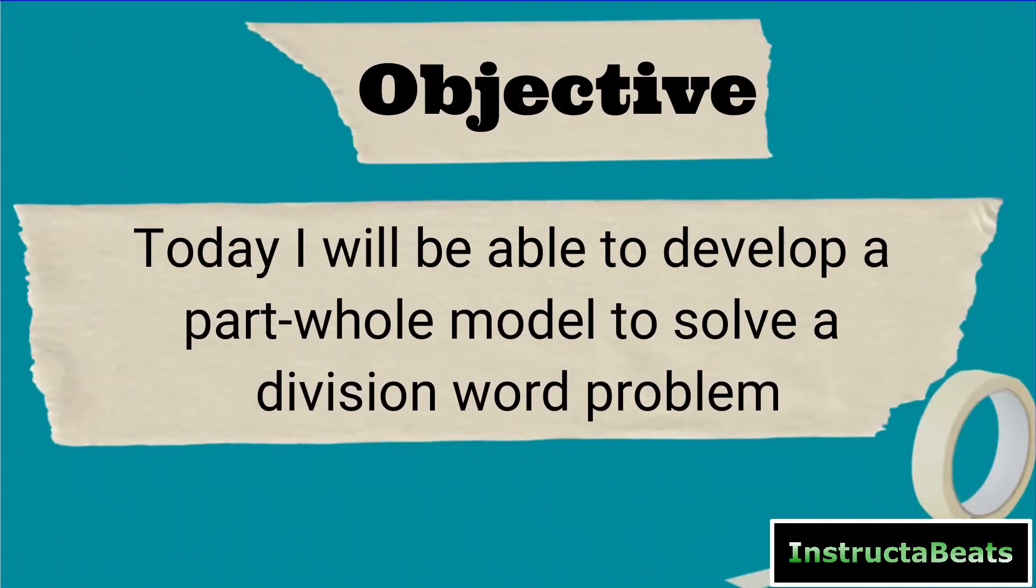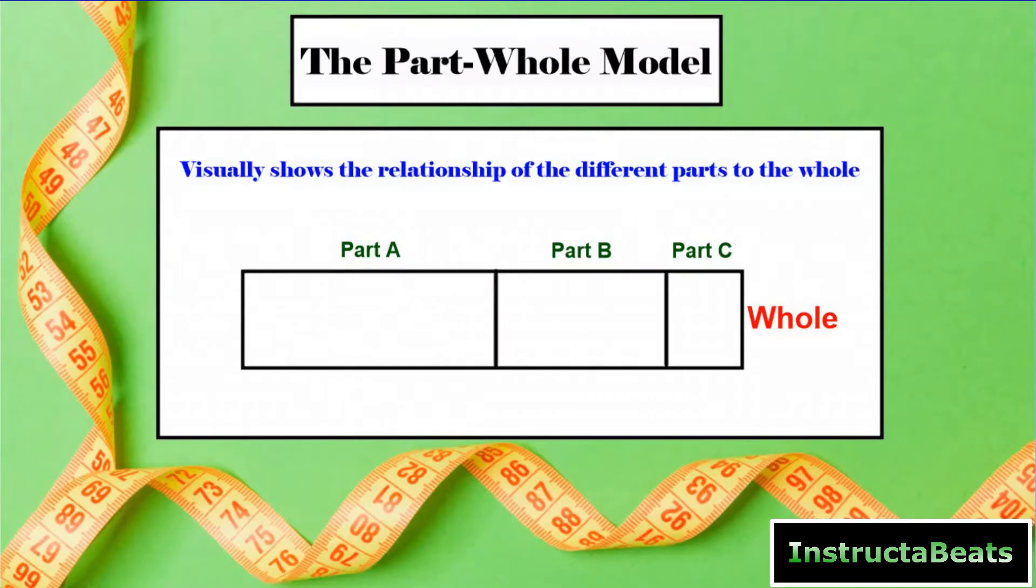Our objective today, I will be able to develop a part-whole model to solve a division word problem. So we're not going to go through this a lot because hopefully if you're on lesson six of our unit, you have seen the part-whole model. You've done it with addition, subtraction, and you did the last lesson with multiplication. That's where this really needs to start before you do this one because you have to have that basic understanding of the equal groups and labeling the different parts to help you figure out what to do when you are doing division.